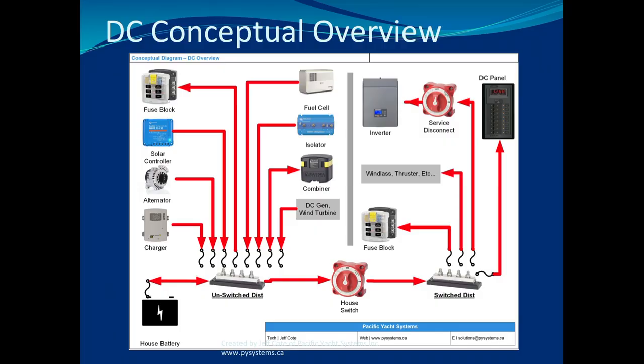After that, you have what's called a switched distribution. For example, your DC panel — if you turn your battery switch off, your DC panel goes dead. We're going to be talking a lot about that, because this is where things become magical on boats. The whole mystery of boating happens because people don't distinguish between unswitched and switched distribution. The big takeaway today is: where should my connection go? Is it unswitched or switched?